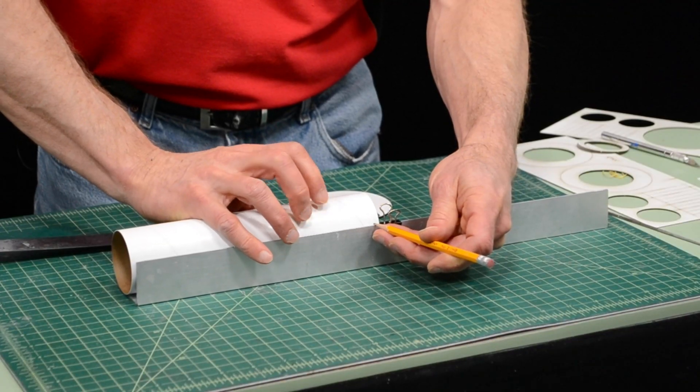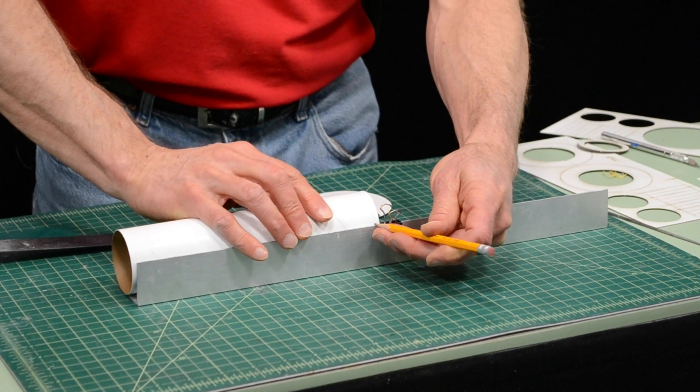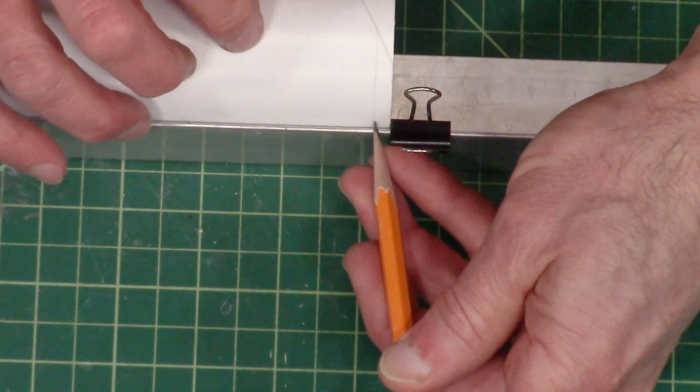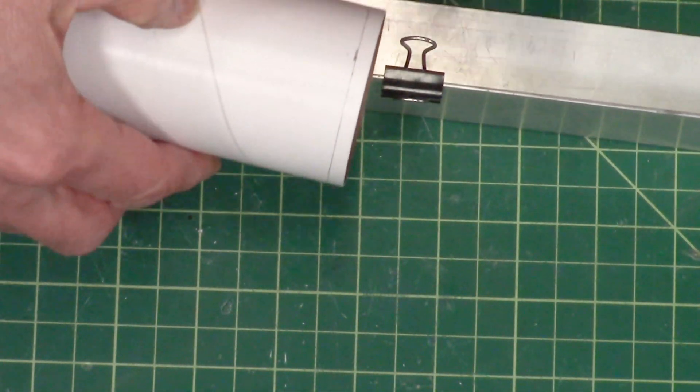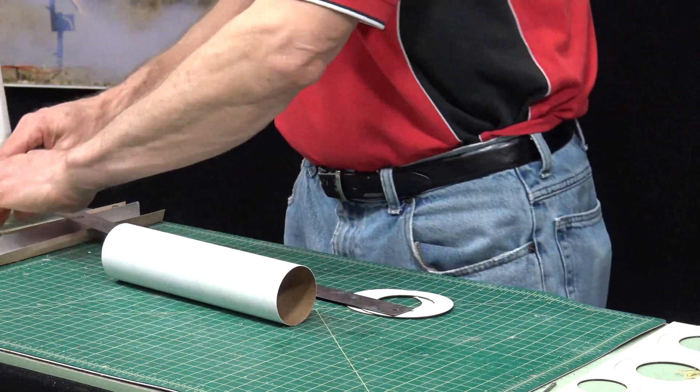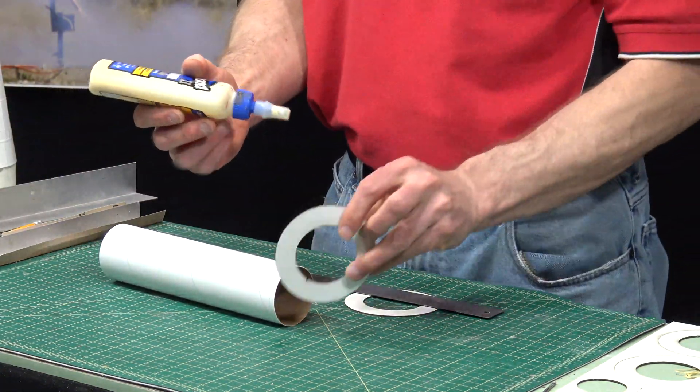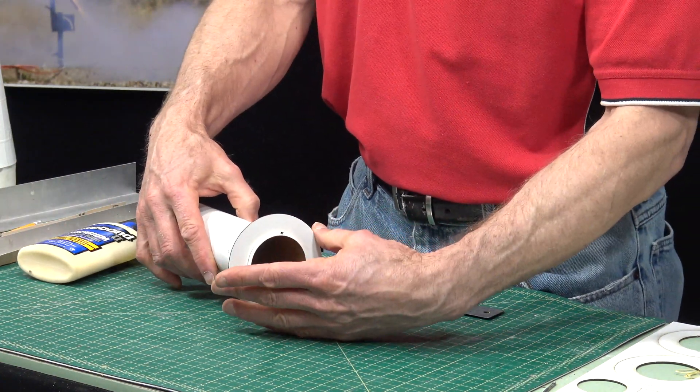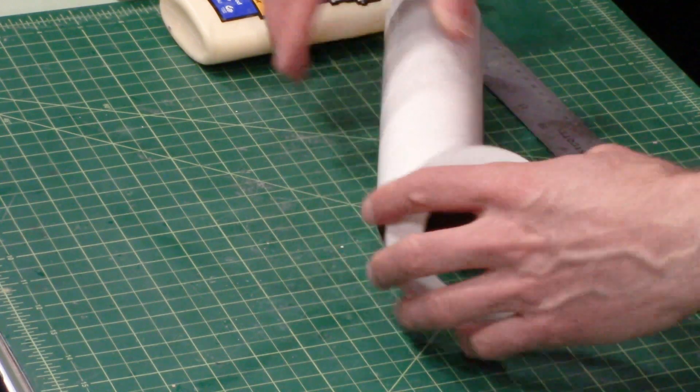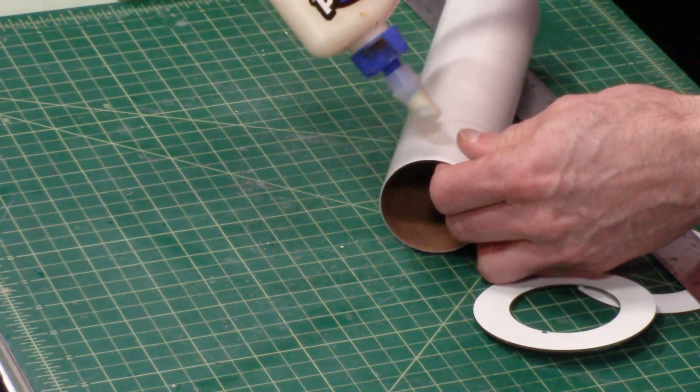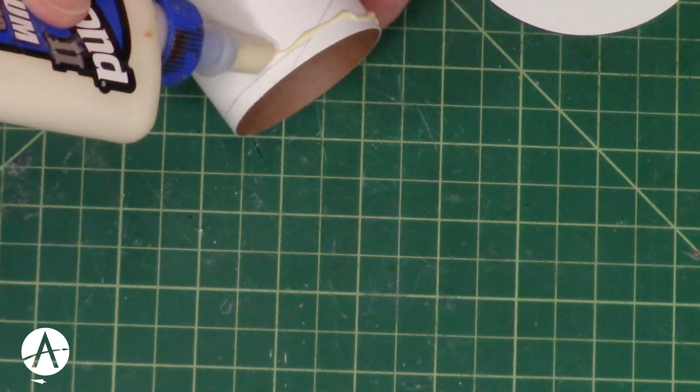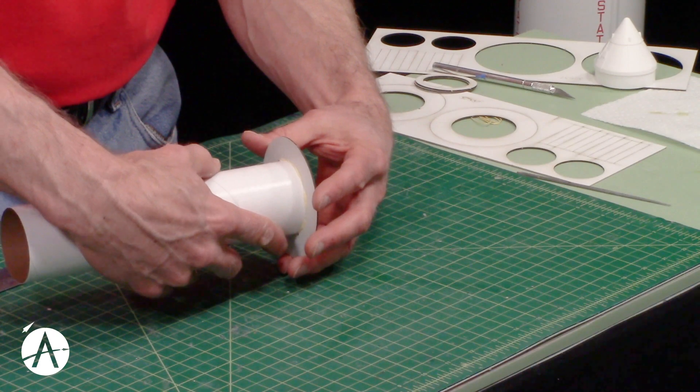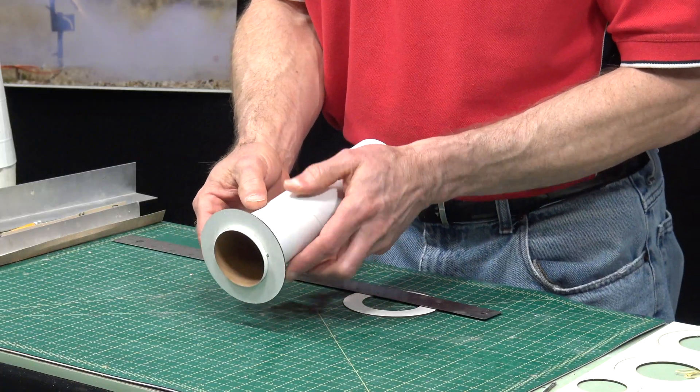So here's my mark right there. Hold the pencil still and rotate it around. You can see the line around there. And then we want to glue the one with the notches just along that mark. Just on the opposite side of the mark right there. Just like that.